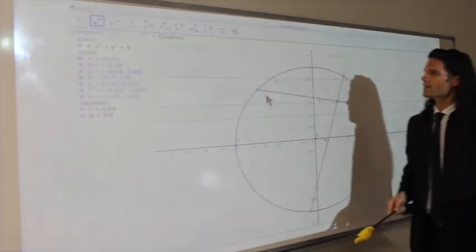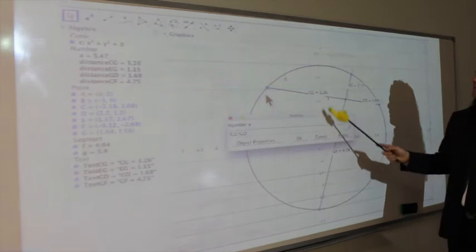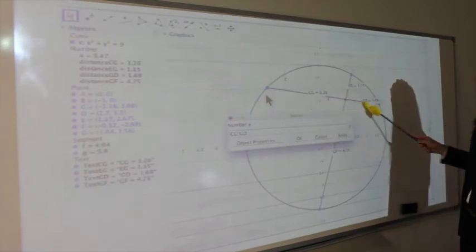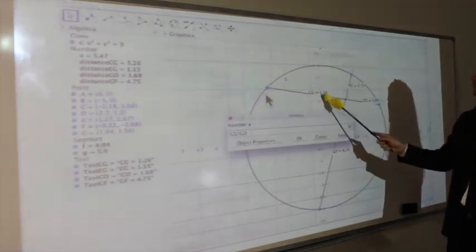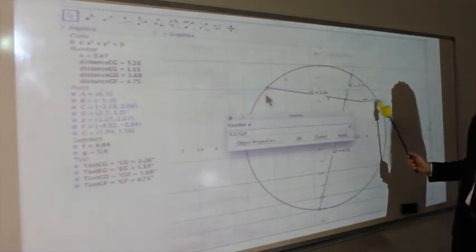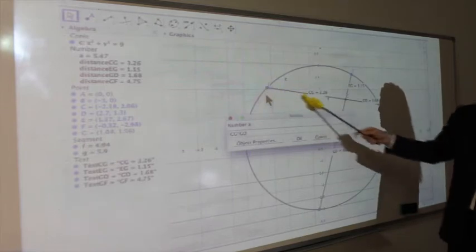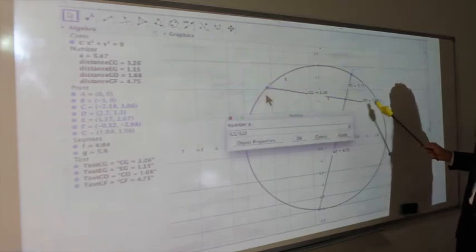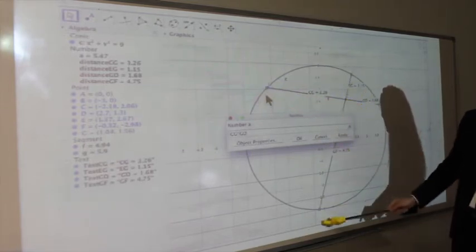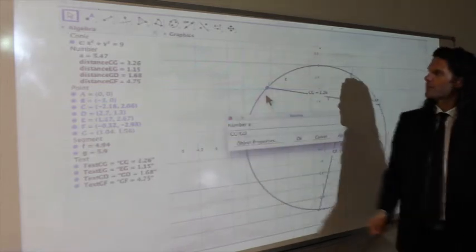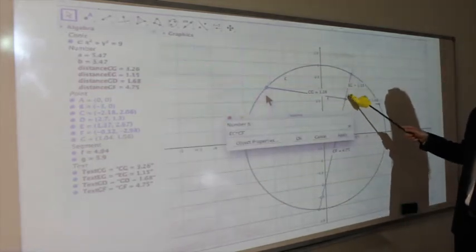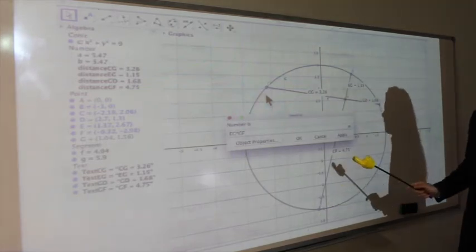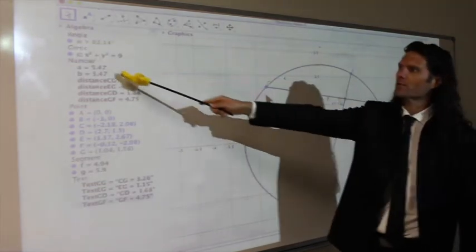By chord lengths, we're going to see that this segment multiplied by this segment is equal to this segment times that segment. Indeed we get CG, which is 3.26, times CD, which is 1.68 - this part times this part is equal to this part times that part: 5.47. And then same thing, EG which is 1.15 times GF which is 4.75 does equal 5.47. So that checks out.